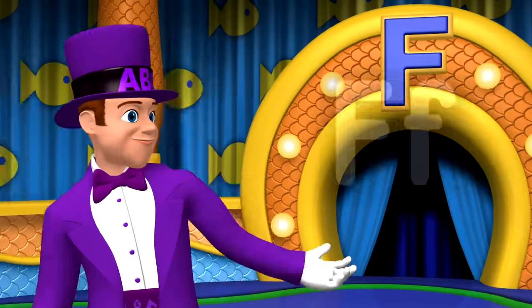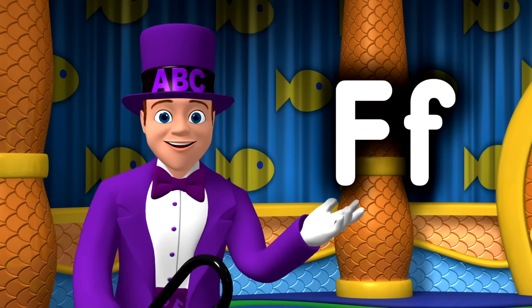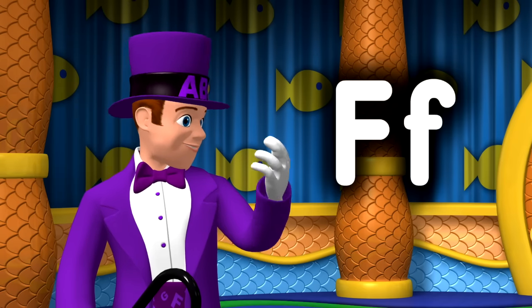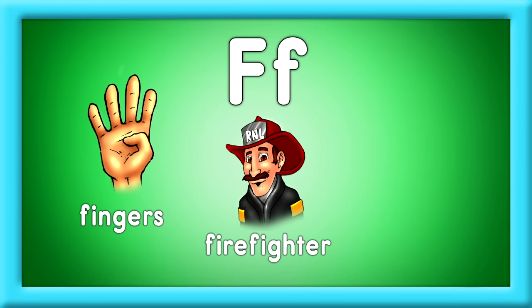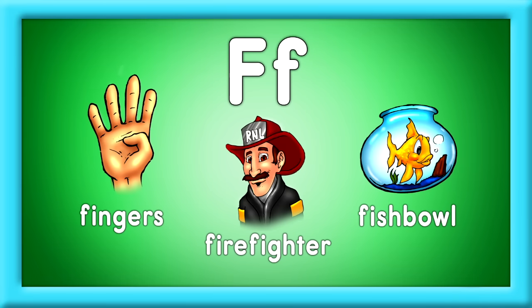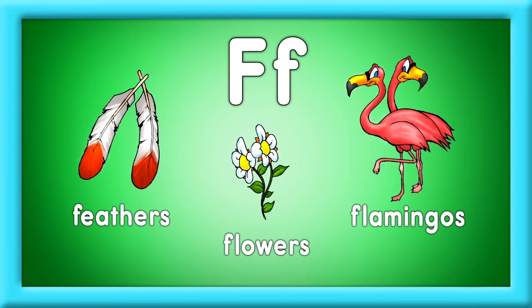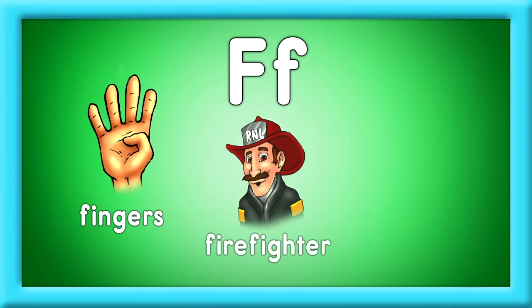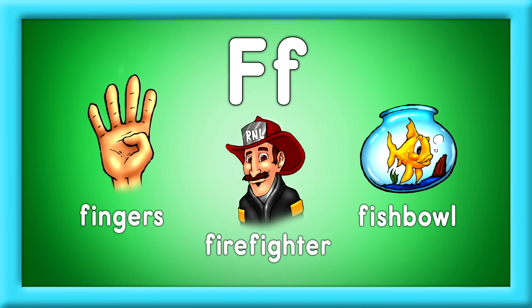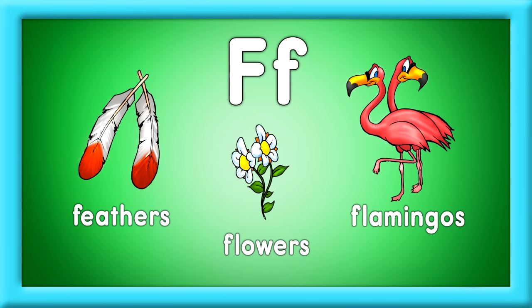FANTASTIC! I see a capital F and a lowercase f. Fingers, firefighter, and fishbowl. Feathers, flowers, and flamingos, too. Start with F, I can tell you. Fingers, firefighter, and fishbowl. These words start with F, I know. Feathers, flowers, and flamingos, too. Start with F, I can tell you.